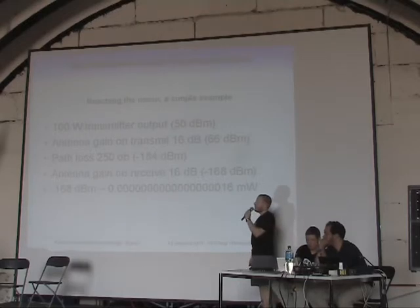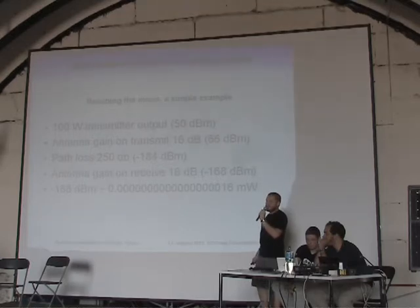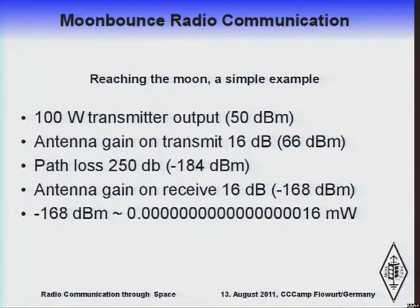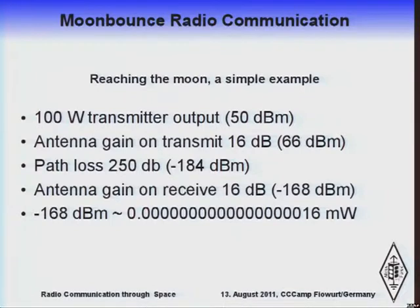Here's a very simple link budget calculation. We have a signal of 100 watts — just like a standard light bulb, the bright ones no longer available in the EU. That equals 50 dBm of signal power. We use a directional antenna, which gives a gain of 16 dB, so you just add that to get 66 dBm. Then there's the path loss of 250 dB. Antennas work in receive as well, giving another 16 dB gain. We end up with a received signal of minus 168 dBm, which is a milliwatt with 17 zeros after the decimal point — not very strong.